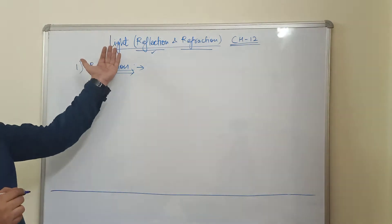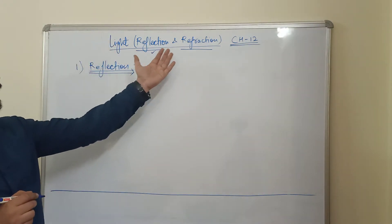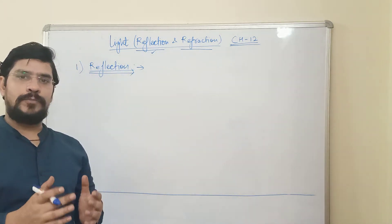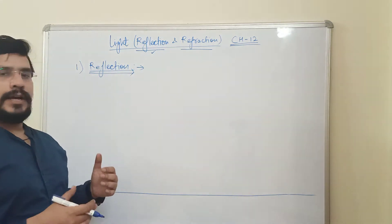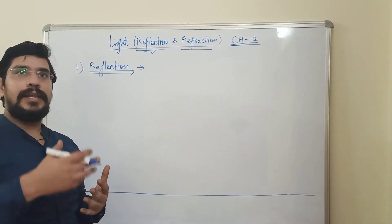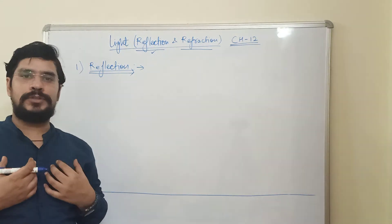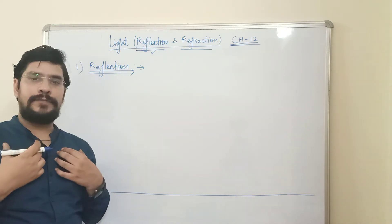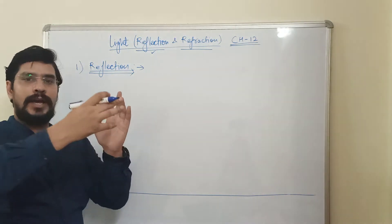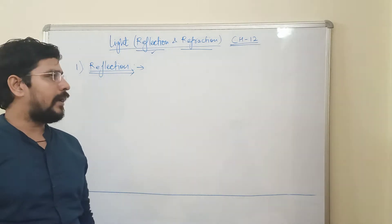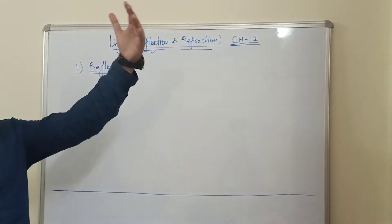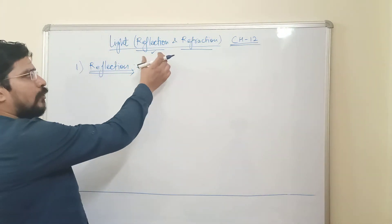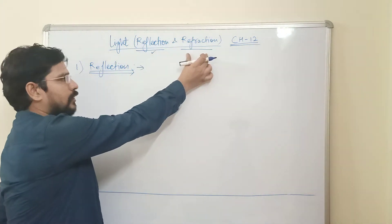We all know about light. Light is the form of energy which helps us in viewing objects. You are able to see me because light is coming from a light source — the tube light — it is reflecting from my body and from the board, going into the camera of the mobile, and you are able to see us. So light is a form of energy which helps us to see, and this light undergoes the phenomena of reflection and refraction.